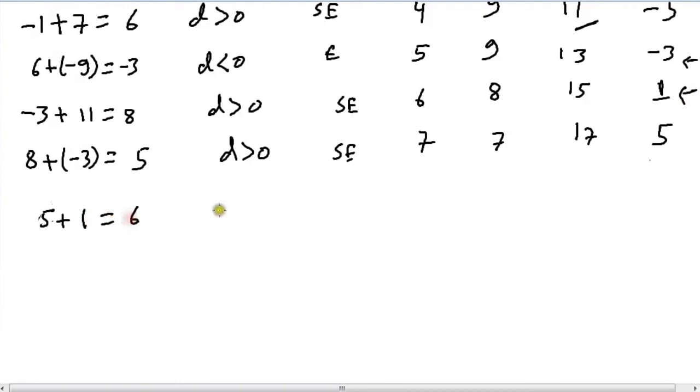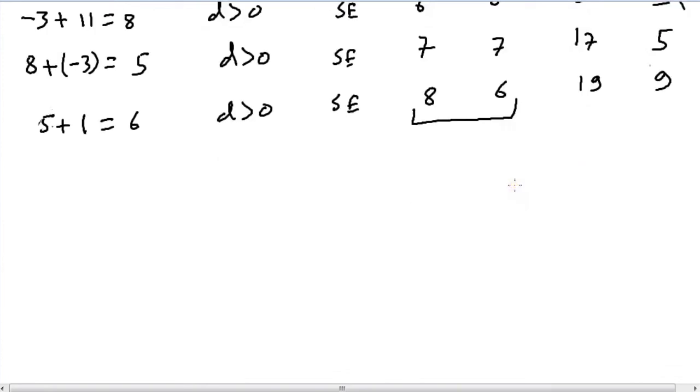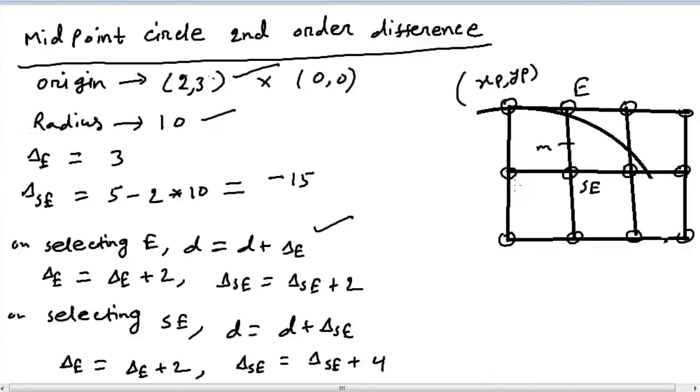d is greater than zero which is SE. x becomes 8, y becomes 6. del_e would become 19 and del_se becomes 9. However, this doesn't really matter anymore because our ending condition is reached - our x is greater than y at this point. So we've already crossed the first octant, so this is our stopping condition. We don't need to go any further.